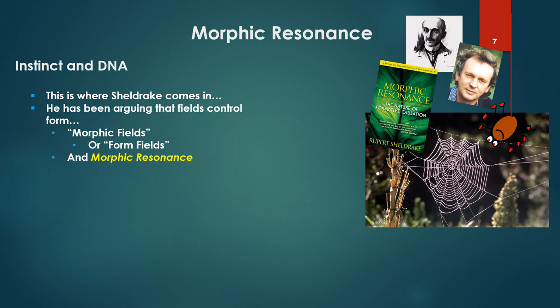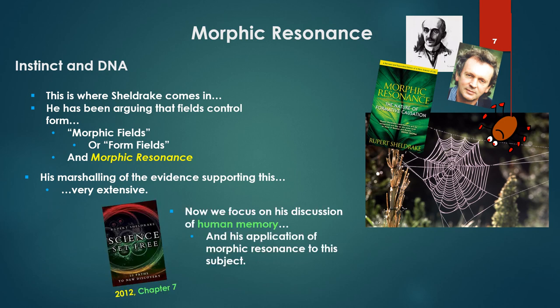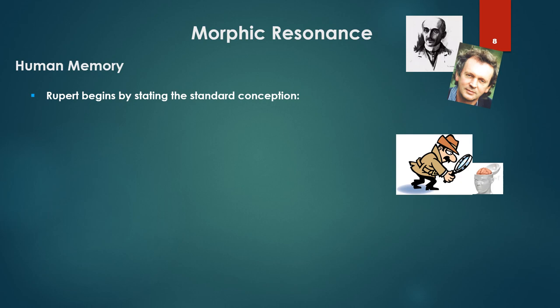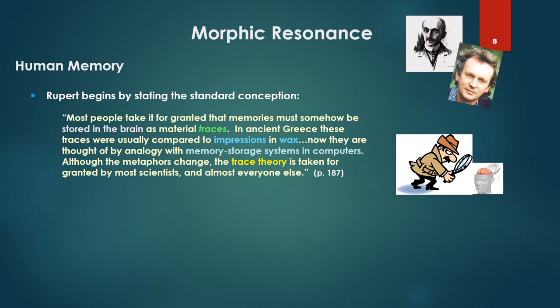Sheldrake has been arguing that fields control form — thus morphic fields, morphic relating to form, and thus morphic resonance. His marshaling of the evidence supporting this with respect to form is very extensive. We're focusing on his discussion of human memory and his application of morphic resonance to this subject. Rupert begins by stating the standard conception: most people take it for granted that memories must somehow be stored in the brain as material traces. In ancient Greece, these were compared to impressions in wax; now they are thought of by analogy with memory storage systems in computers. The trace theory is taken for granted by most scientists and almost everyone else.